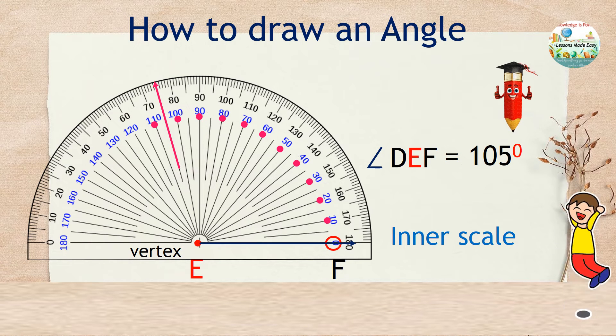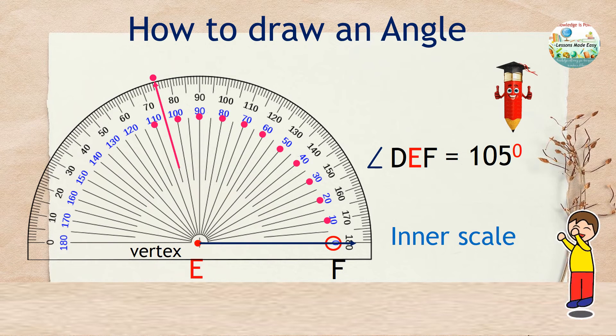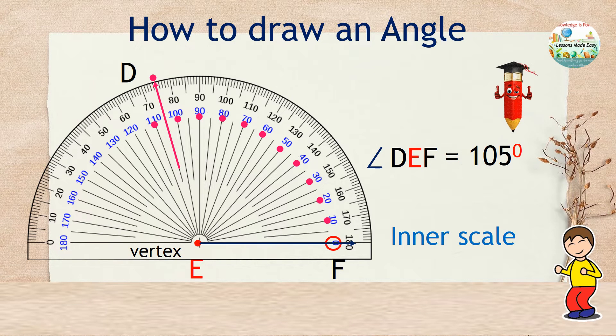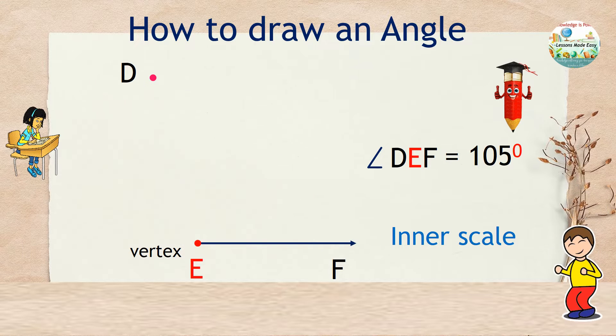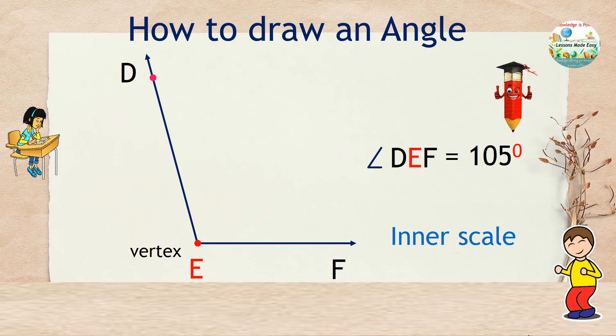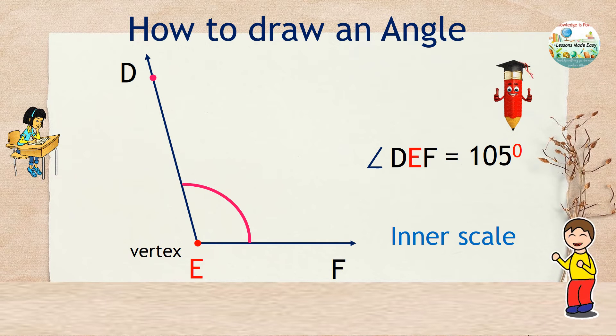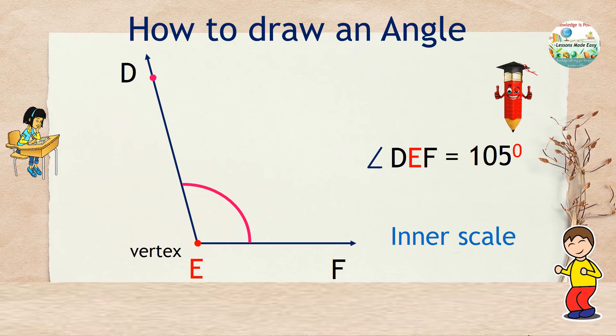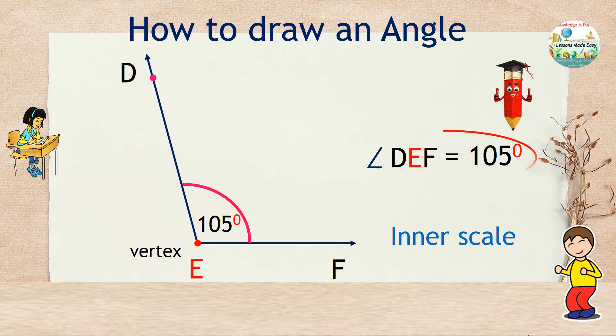Now, on the edge of your protractor, mark a point that corresponds to 105 degrees and name this point D. This time, you can remove the protractor. Then, draw a ray by connecting the vertex to point D. The corner formed is our angle. And just indicate the size of the angle that is 105 degrees. And there you have it. Angle DEF that is 105 degrees.